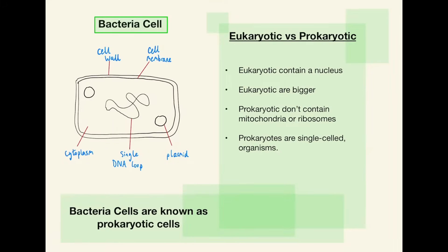Here we have bacterial cells. On the previous slide we had eukaryotic cells — animal and plant cells. Bacteria cells are also known as prokaryotic cells. Prokaryotic cells do not contain a nucleus, they are much smaller than eukaryotic cells, and they do not contain mitochondria or chloroplasts and vacuoles. Prokaryotes are single-celled organisms. In place of a nucleus, there is a single DNA loop in the middle, and free-floating plasmids which contain the genetic information — they are just floating around in the cytoplasm instead of being in an enclosed space.